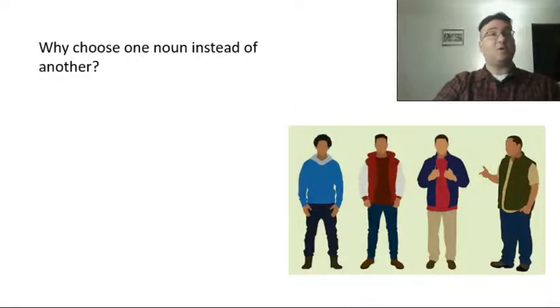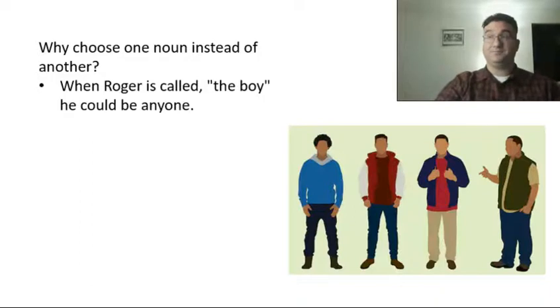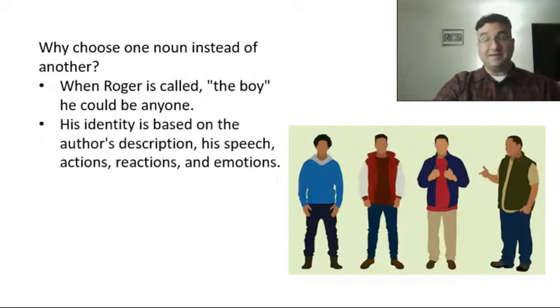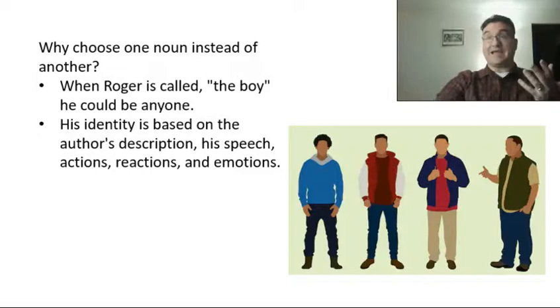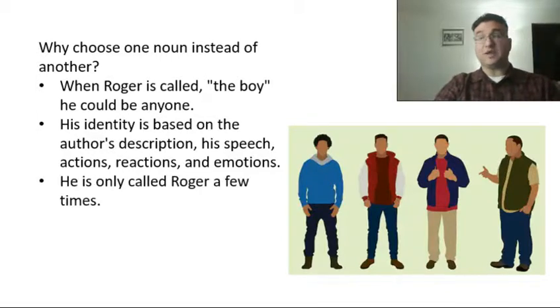We can ask why you would choose one kind of noun instead of another when you're writing. When Roger's called the boy, he could be anyone. He could be any one of all the boys. His identity, who we think of Roger, comes from how he's described by the author, what he says, his actions, his reactions, his emotions. So we get to know Roger before we even know his name. He's only called Roger a few times in the middle of the story.